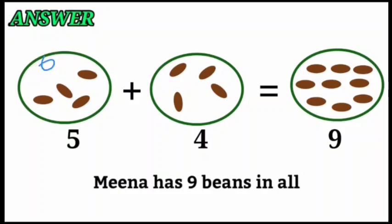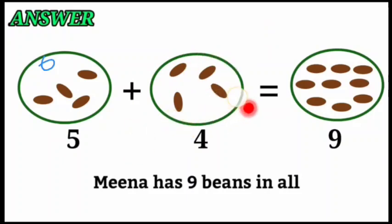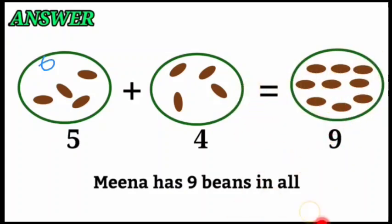Here are five beans, and her friend gave four more. Count the first group: one, two, three, four, five beans. Then her friend gave four beans: one, two, three, four. Now count all together: one, two, three, four, five, six, seven, eight, nine. Mira has nine beans in all.